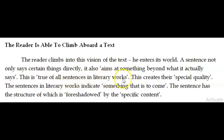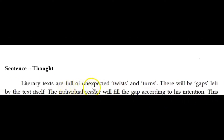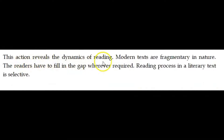This is true of all sentences in literary works, creating the special quality of literature. Sentences in literature indicate something that is to come, which might not be openly discussed by the author. The author gives directions and hints for the reader to imagine the meaning. Literary texts are thus full of unexpected twists and turns, and there will obviously be gaps. These gaps are left by the text itself, and the individual reader will automatically fill the gap according to his personal intention. This action reveals the dynamics of reading.